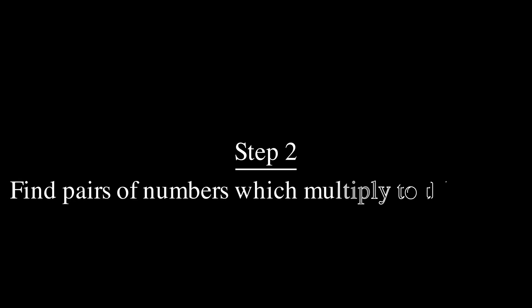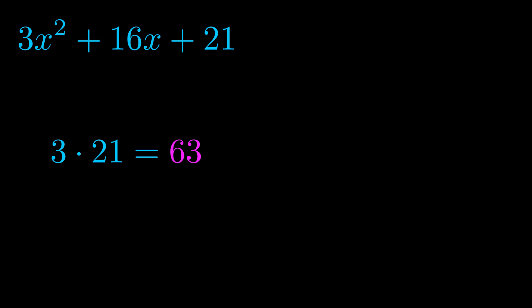Step two is to try to find all of the pairs which multiply to this number. Now it turns out you don't really need to find all of them but go ahead and write down as many numbers as you can that multiply to the magenta value for now. Pause the video and resume when you're ready to continue. Okay, here's what I came up with.